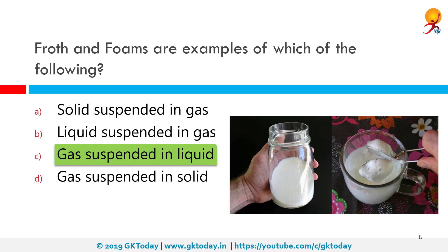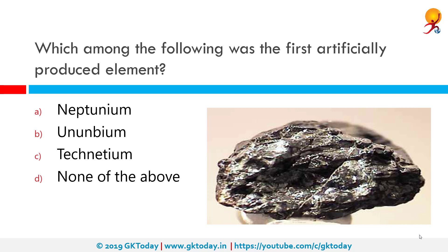Which among the following was the first artificially produced element? The correct answer is technetium. Technetium is a chemical element with the symbol Tc and atomic number 43. It is the lightest element whose isotopes are all radioactive — none of them are stable, excluding the fully ionized state of 97Tc.